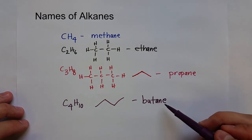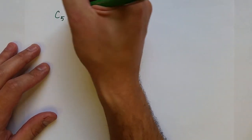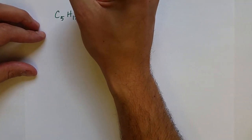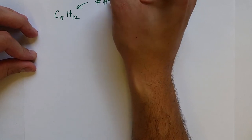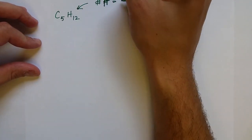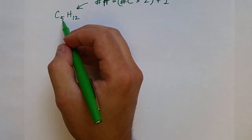So methane, ethane, propane, and butane are our first four hydrocarbons. After that, it actually starts to make a little bit more sense in how we name them. Five carbons is C5H12. There's a quick way to remember that — the number of hydrogens for alkanes is always two times the number of carbons plus two. So five times two is ten, plus two is twelve.